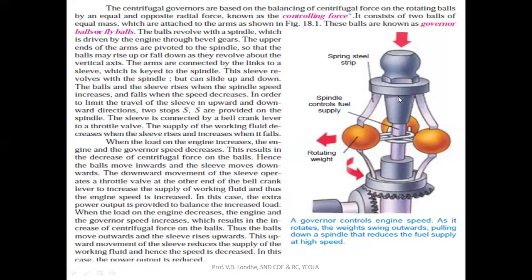There is a needle here which controls the supply of fuel towards the engine. When the load on the engine increases, the engine and governor speed decreases, which results in a decrease of centrifugal force on the balls. The balls then move inward and the sleeve moves downward. Due to the downward movement of the sleeve, it opens the throttle valve present at the carburetor section, increasing the supply of fuel, and thus the engine speed is increased.